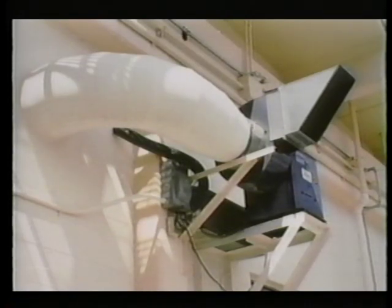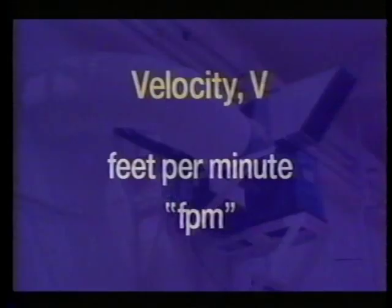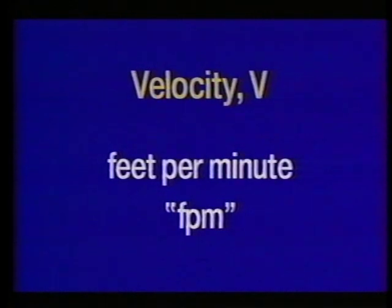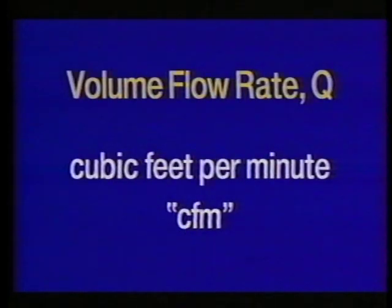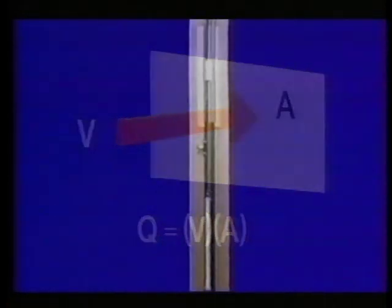If we move 1,000 cubic feet of air per minute through ductwork, we're moving about 75 pounds of air every minute. This requires choosing fans and motors large enough to handle the load. The speed or velocity, called V, of air is measured in feet per minute or FPM. Air volume flow rate, called Q, is expressed in cubic feet per minute or CFM. We cannot directly measure Q; it is equal to the product of the average velocity and the cross-sectional area through which the air flows — that is, Q = V × A.